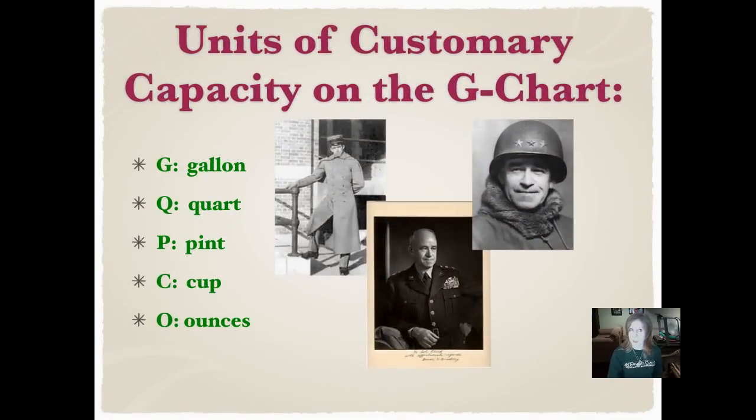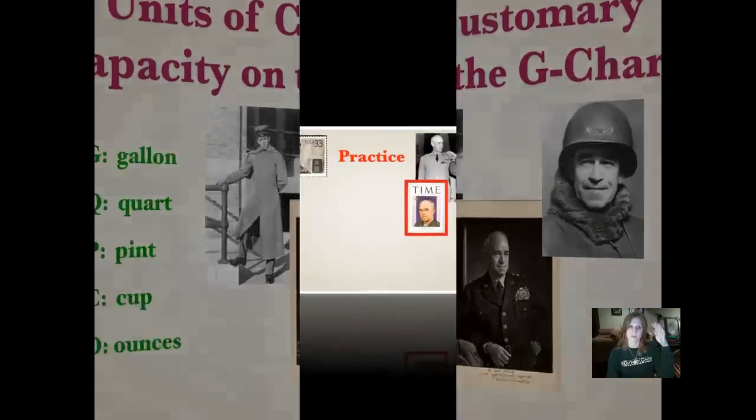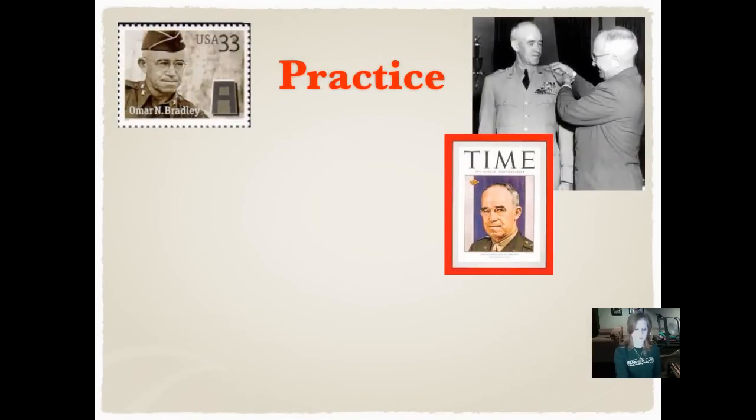These are the units of capacity that we're going to be using that are listed on the G-chart. So there are some fabulous pictures of General Bradley, and one when he was young, I like that coat he's wearing. We're going to talk about gallons, quarts, pints, cups, and ounces, and I actually wrote those in order from greatest to least. So gallons are the greatest, and then we're going to go to the least.